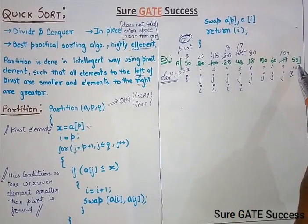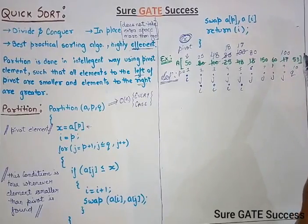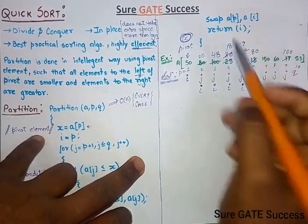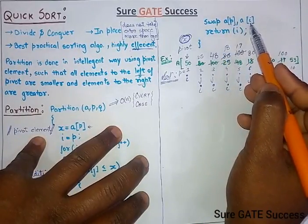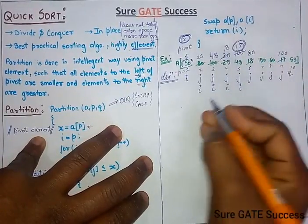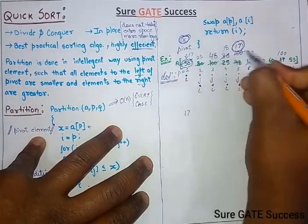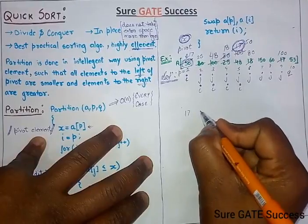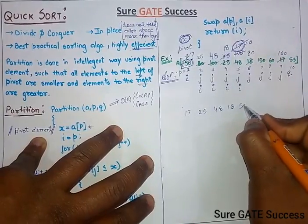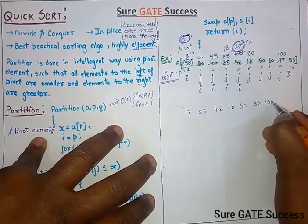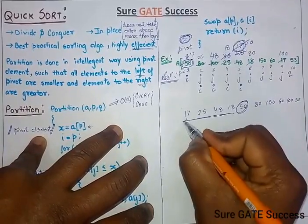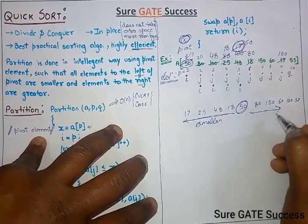Now we check 53: it is greater than the pivot, so no change. After checking the last value, we swap the pivot element with the I-th element. The pivot is 50 and the I-th element is 17, so we swap them. The resulting array is: 17, 25, 48, 18, 15, 50, 80, 150, 60, 153. Now you can see: the pivot 50 is in place, all elements to its left are smaller, and all elements to its right are greater.